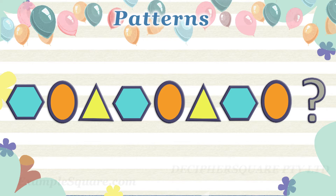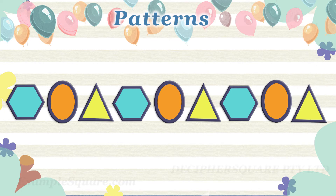What should come next? In this pattern, there are three shapes: hexagon, oval, and triangle. An oval comes after hexagon, and a triangle comes after an oval. And then the three shapes repeat. So here, a triangle should come next.